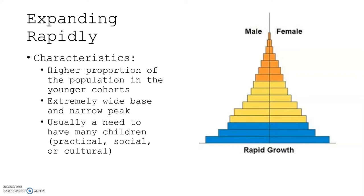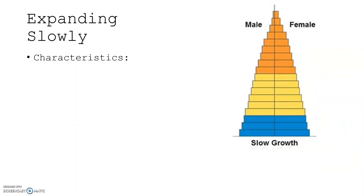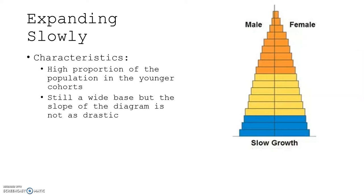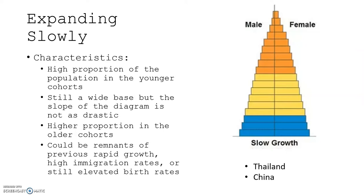Expanding slowly is characterized by a high proportion of the population in the younger cohorts, still a wide base, but the slope of the diagram is not as drastic. There's a higher proportion in the older cohorts. This could be remnants of a previous rapid growth, high immigration rates, or still elevated birth rates. Some population pyramids deal just with natural growth, while others also include immigration and emigration, depending on the data collected.